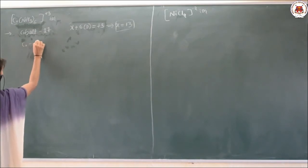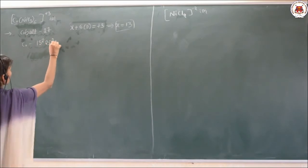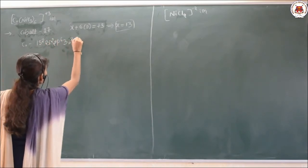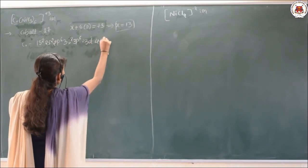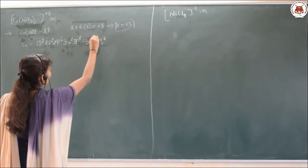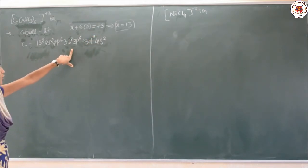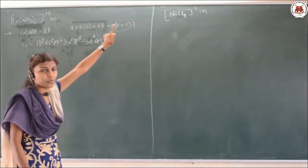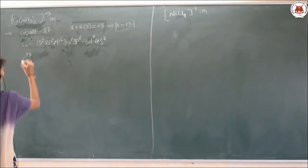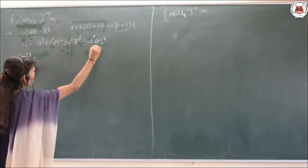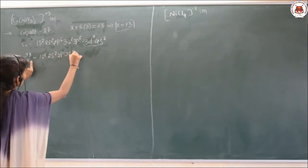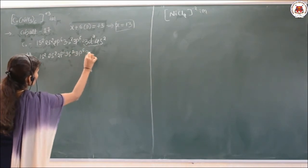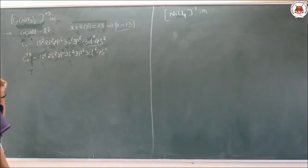Let us write cobalt's electronic configuration: 1s², 2s², 2p⁶, 3s², 3p⁶, 3d⁷, 4s². Atomic number is 27. Now for Co³⁺, we remove 3 electrons from the outer shells, giving us 3d⁶, 4s⁰.